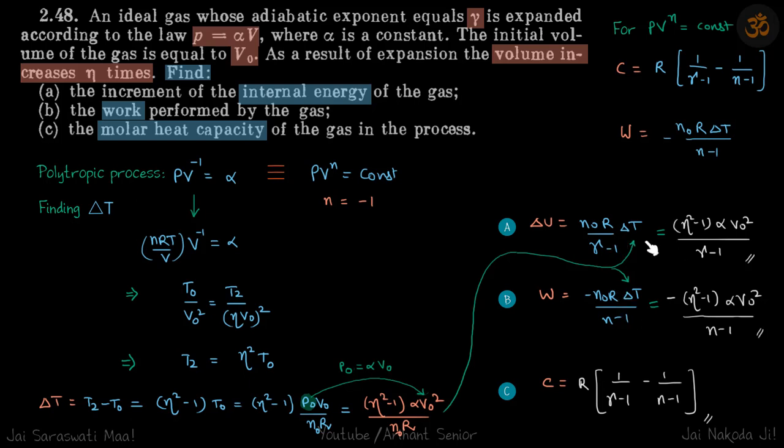So we are given volume increases eta times and we are given the process. From here, this is the relation between pressure and volume, so we'll get it into a relation between temperature and volume. That's how we'll calculate delta t.